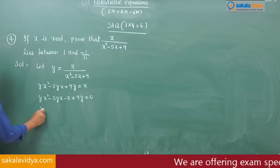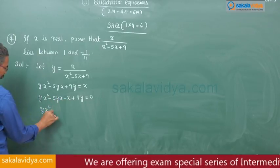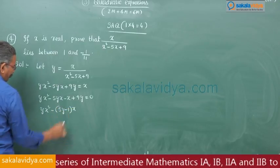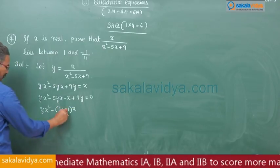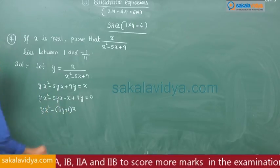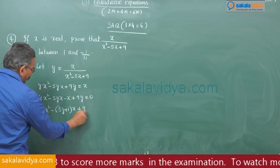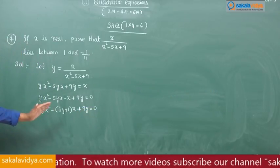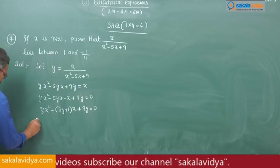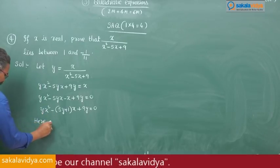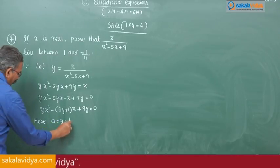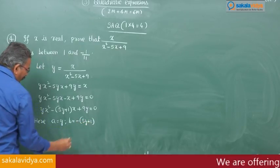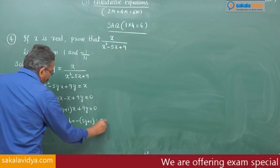Bringing x to the left side: yx² - 5yx - x + 9y = 0. Taking -x common from the middle terms: yx² - (5y - 1)x + 9y = 0. This is in the form ax² + bx + c = 0, where a = y, b = -(5y - 1), c = 9y.